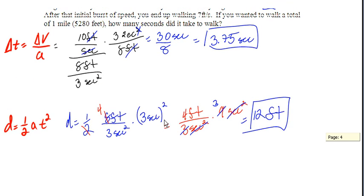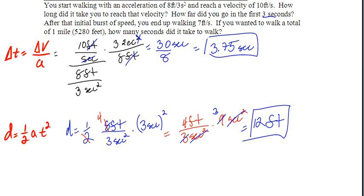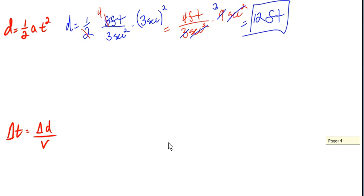So the last part of the question says, after that burst of speed, you end up walking 7 feet per second. If you wanted to walk a total of a mile, which is 5,280 feet, how many seconds did it take you to walk? So you need to know a couple of things. So in seconds 0 through 3, you went 12 feet.